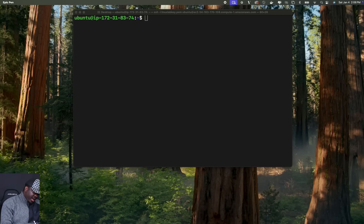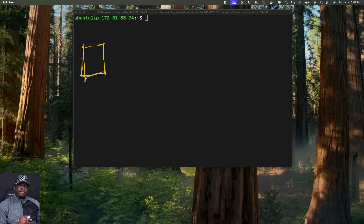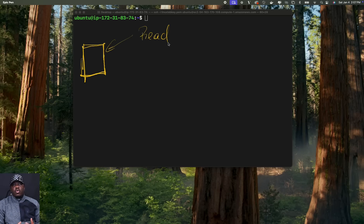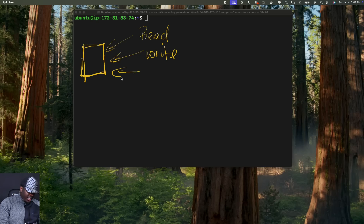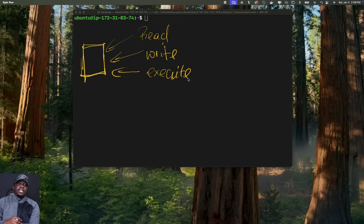The first thing I want you to know is that whenever you create a file in Linux, that file comes with permissions. The first permission is the ability to read this file — who can read and see the content of this file? Another permission attached to this file is the write permission — who has the permissions to edit this file and add content to it? And the final permission is the execute permission — who has the power to execute this file on our system as if it were a program?